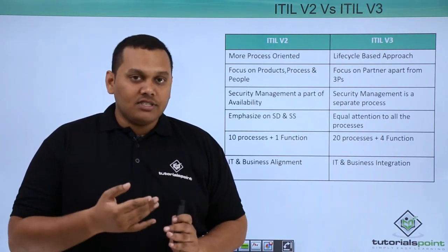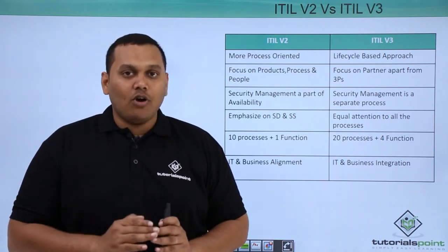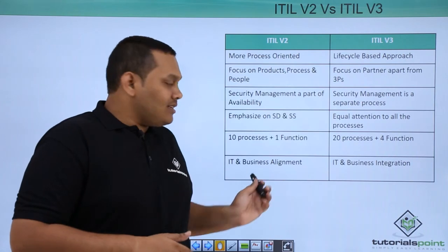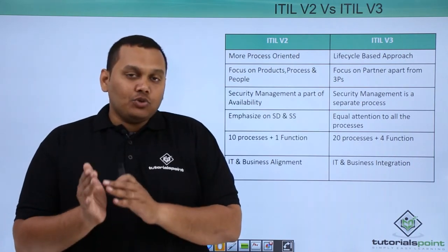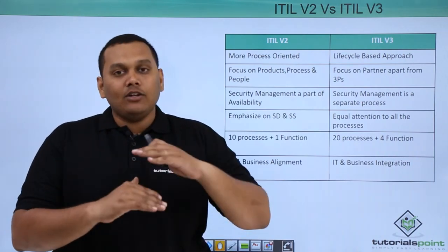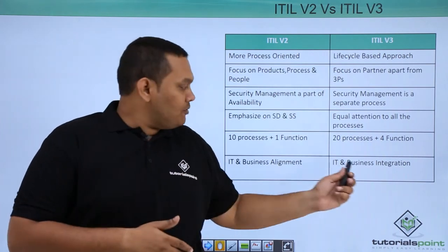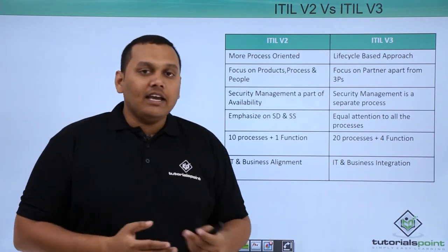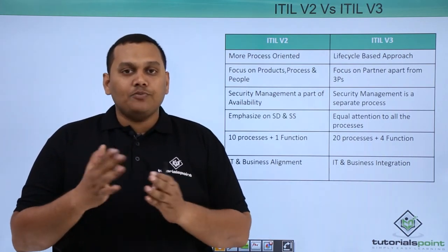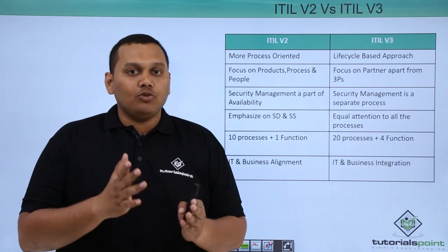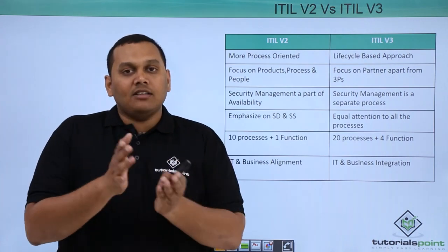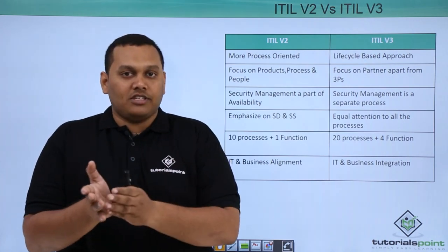That means another 10 processes and three functions were added in version 3. Furthermore, in version 2 IT and business are aligned with each other, but in version 3 they are integrated — meaning there is full transparency between the IT processes and business processes.